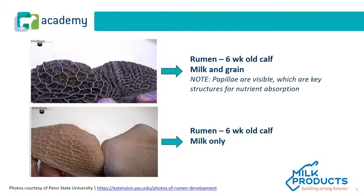In looking at the rumen of a six-week-old calf fed milk and a high-quality grain, note how the papillae are visible — these are key structures for nutrient absorption. If a six-week-old calf, such as a veal calf, is fed milk only, you can see that the papillae are pale and less developed.